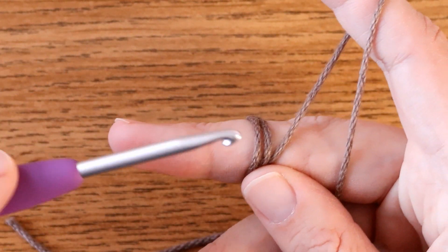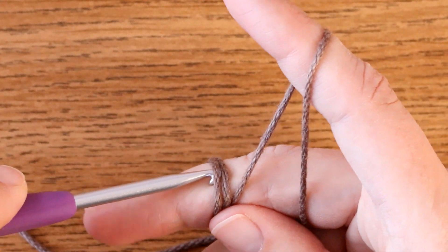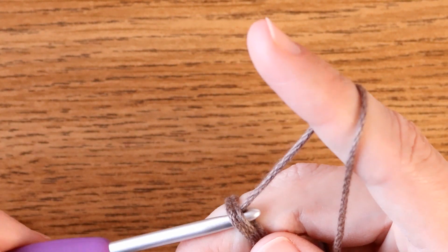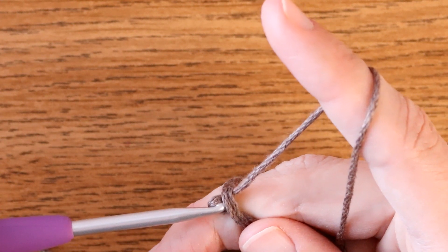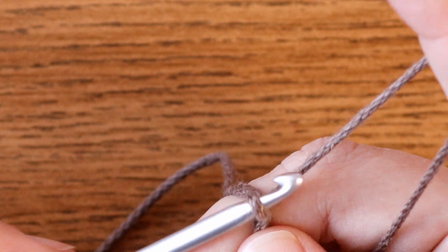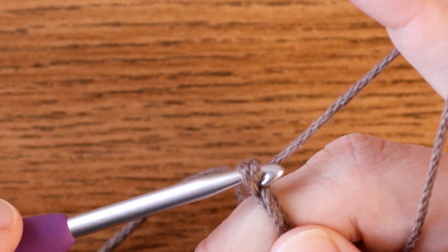You're going to insert your hook underneath all of those little loops, grab your yarn and pull through. From here you can start to create however many chains your pattern needs.